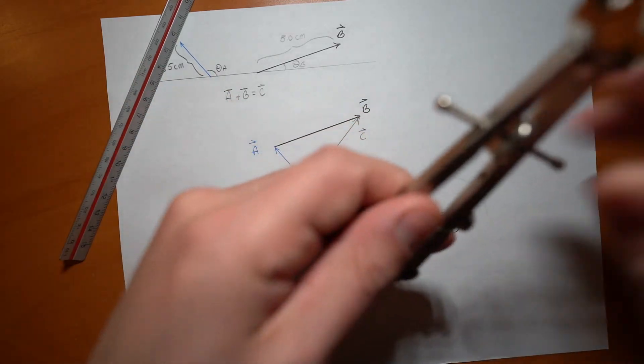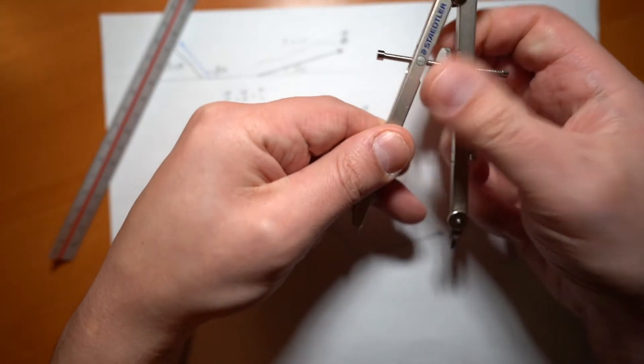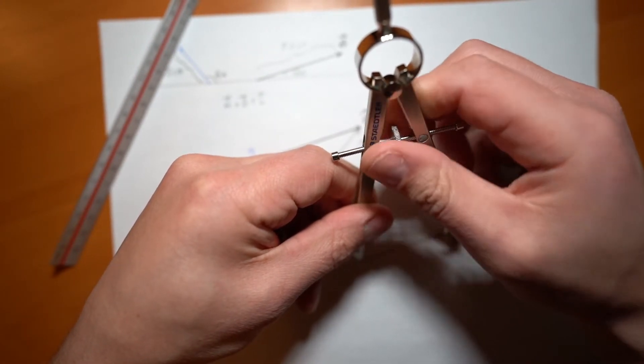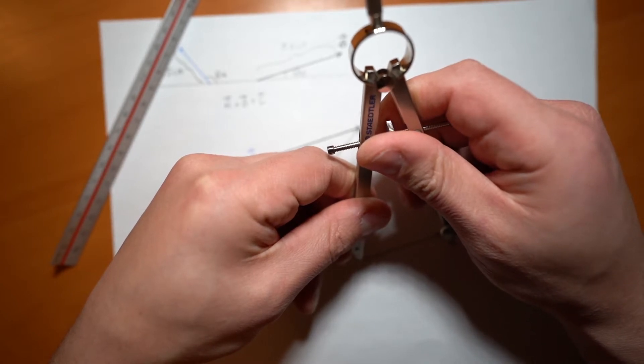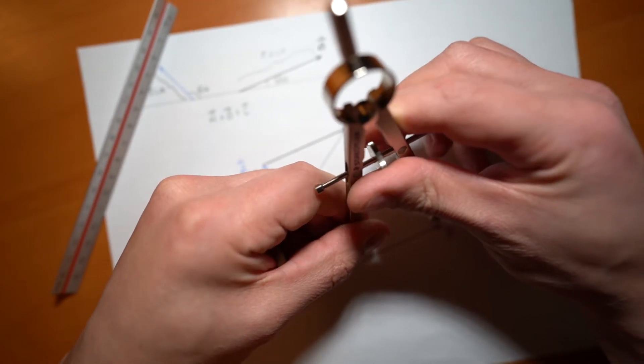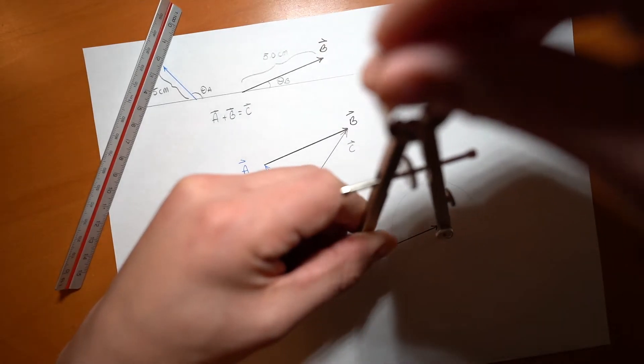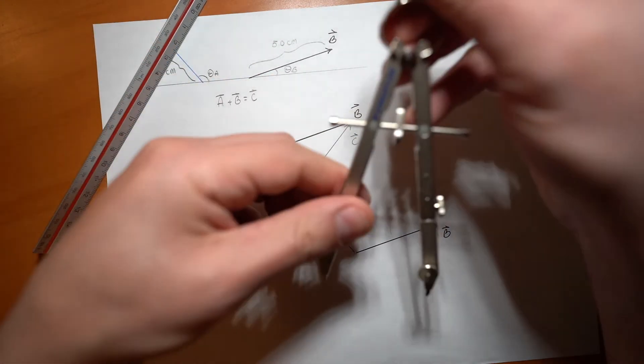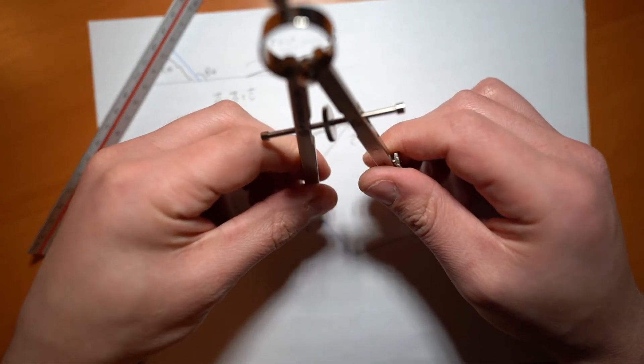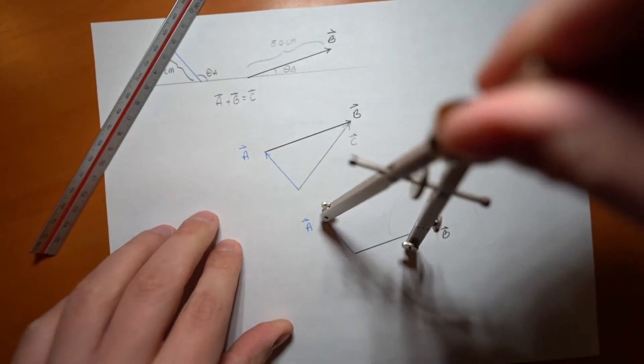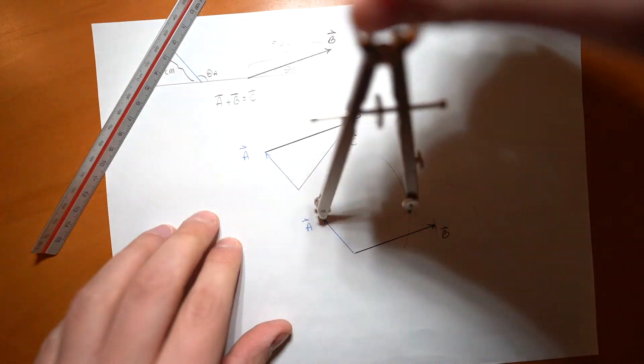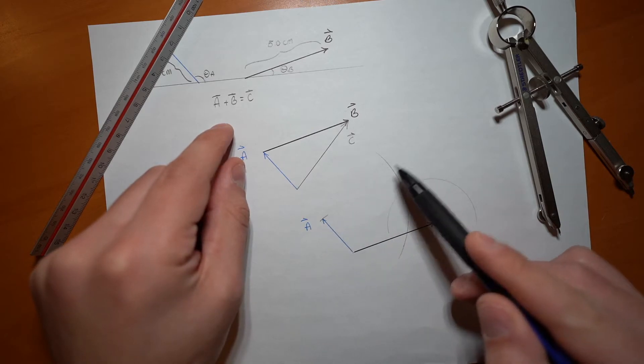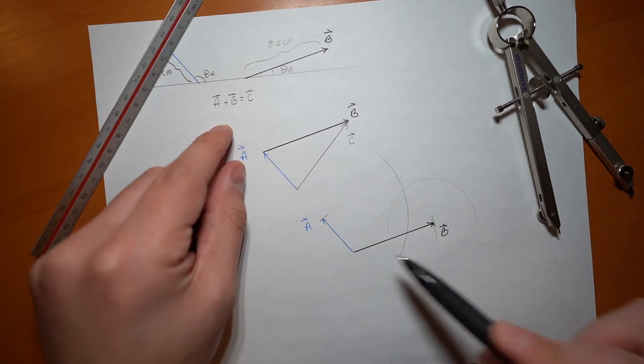Now we'll do the same thing. We will open our compass to be exactly the size of B. I went a little too far there. So now I'm exactly the size that B is. And what I'm going to do is go to the tip of A. Going to the tip of A is like adding all vectors whose magnitudes are the size of B. So now this is all the set of vectors that are the magnitude of B being added to A.